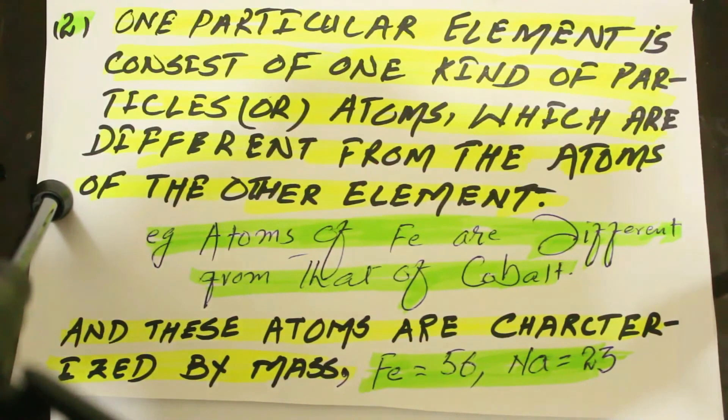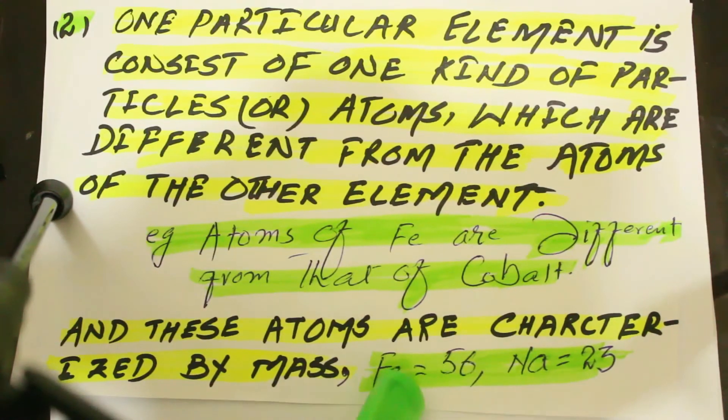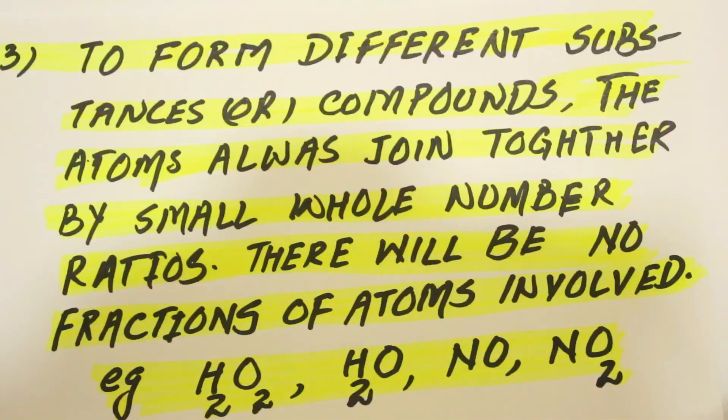Here you can see the iron atom and sodium atom. A sodium atom has an atomic mass of 23 grams and an iron atom has an atomic mass of 56 grams, so the atoms of sodium are different from the atoms of iron metal.